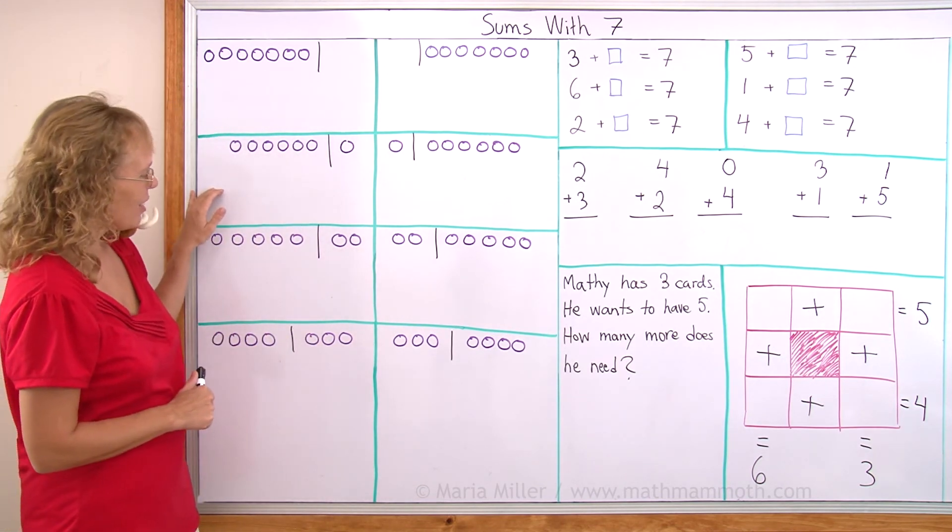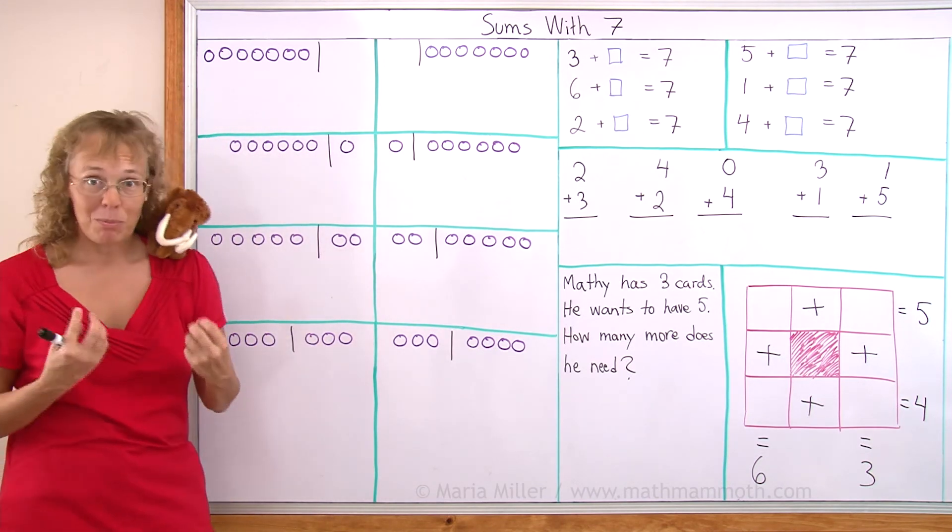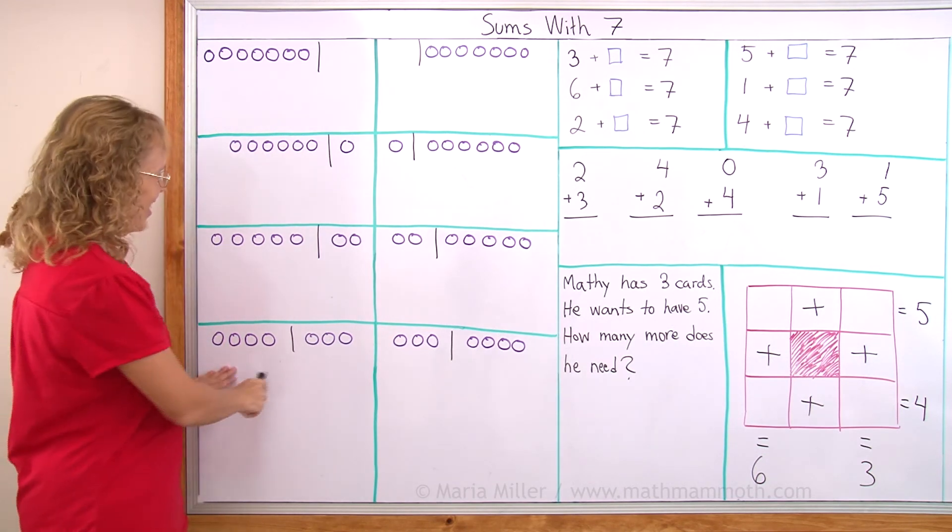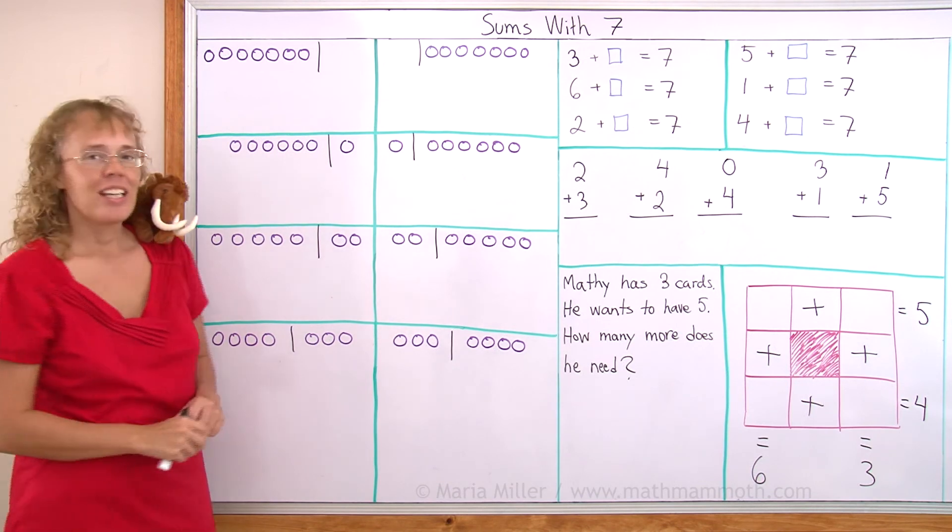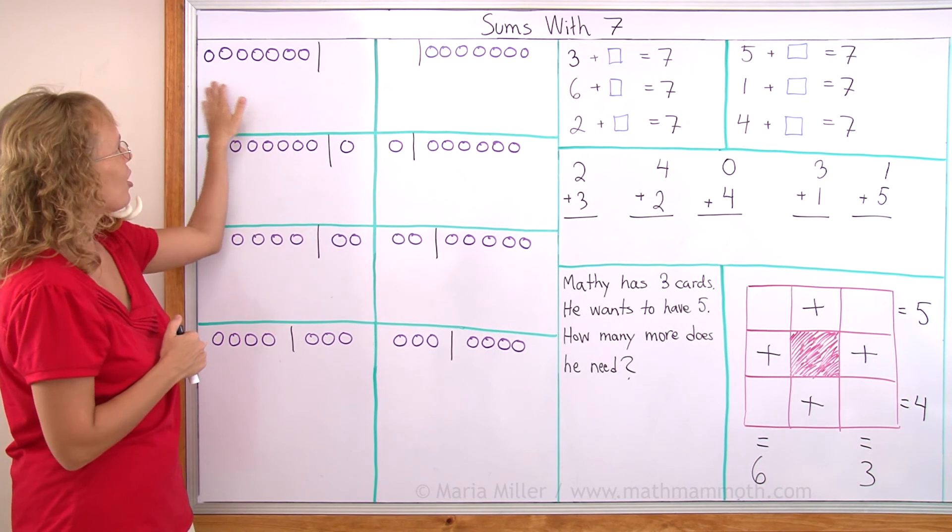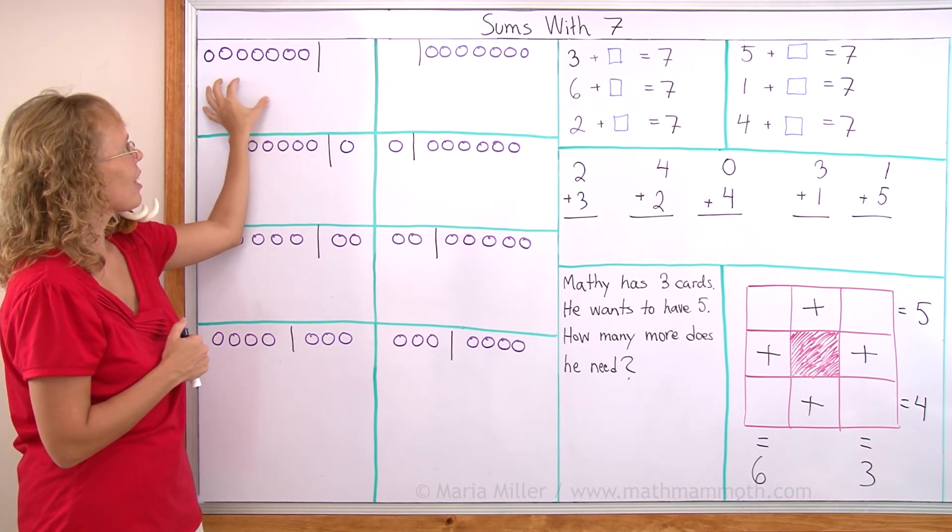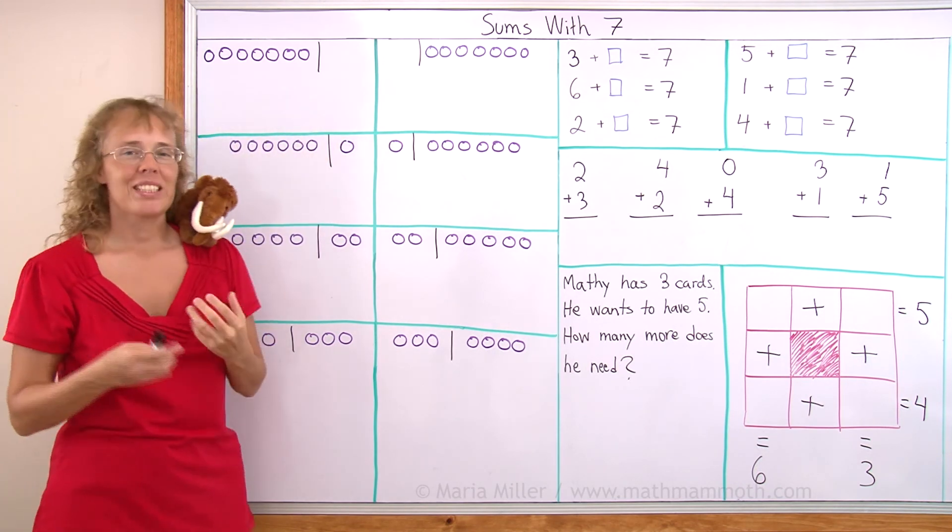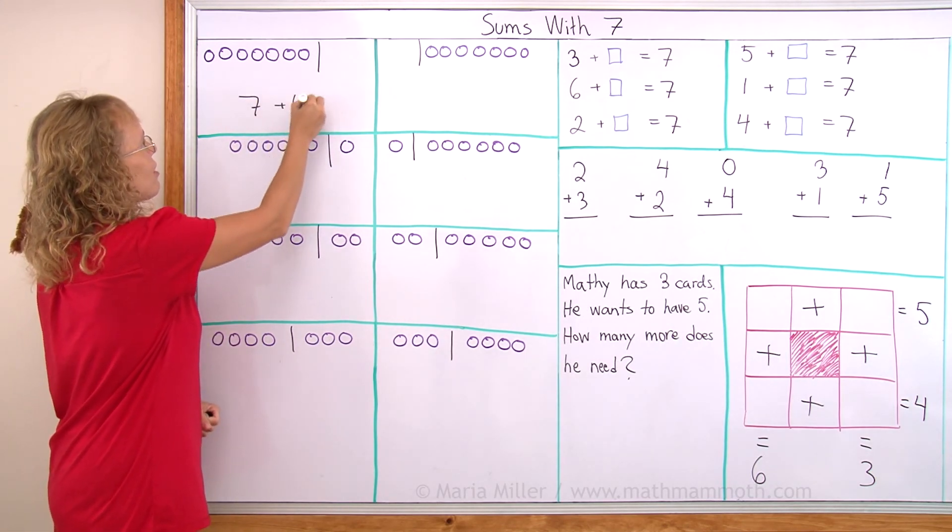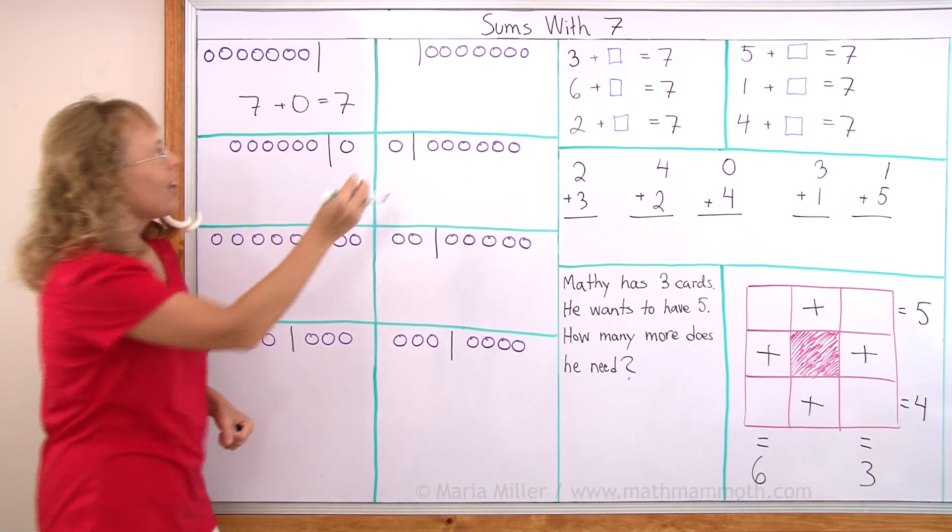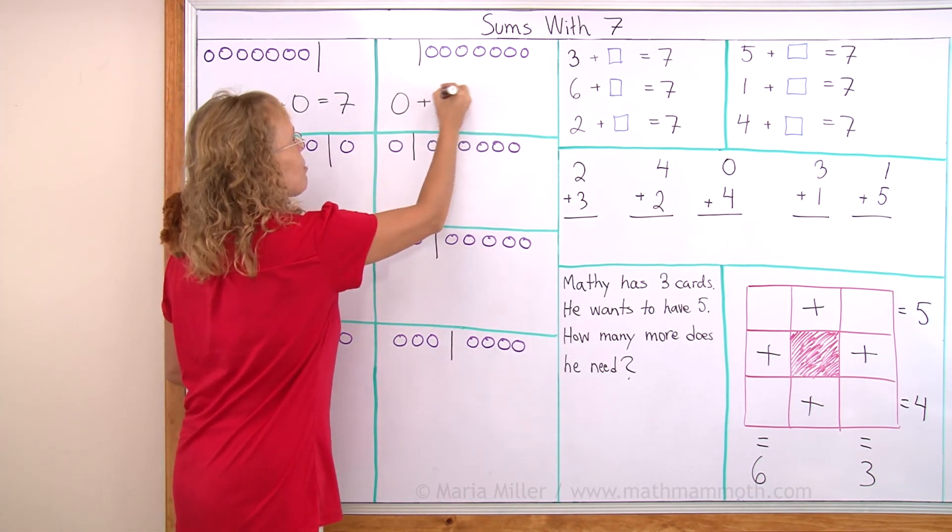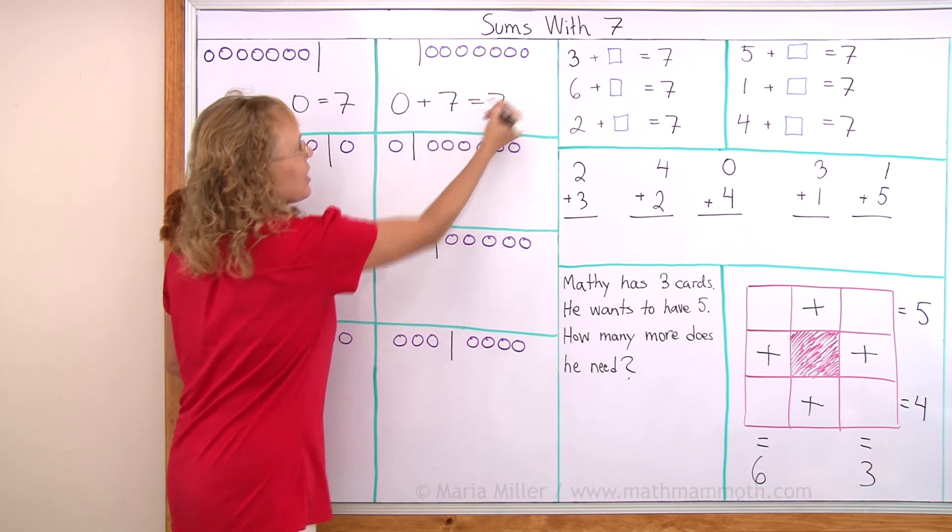I have them written out here where I have seven balls, or maybe you want to think of them as seven plums, in each of these boxes, but they are divided into two groups in different ways. For example, here I have all seven plums on this side like one group and the other group has none. So we can write the addition seven plus zero equals seven. And on the other side there are none here or zero, and then we add seven from this group for a total of seven again.